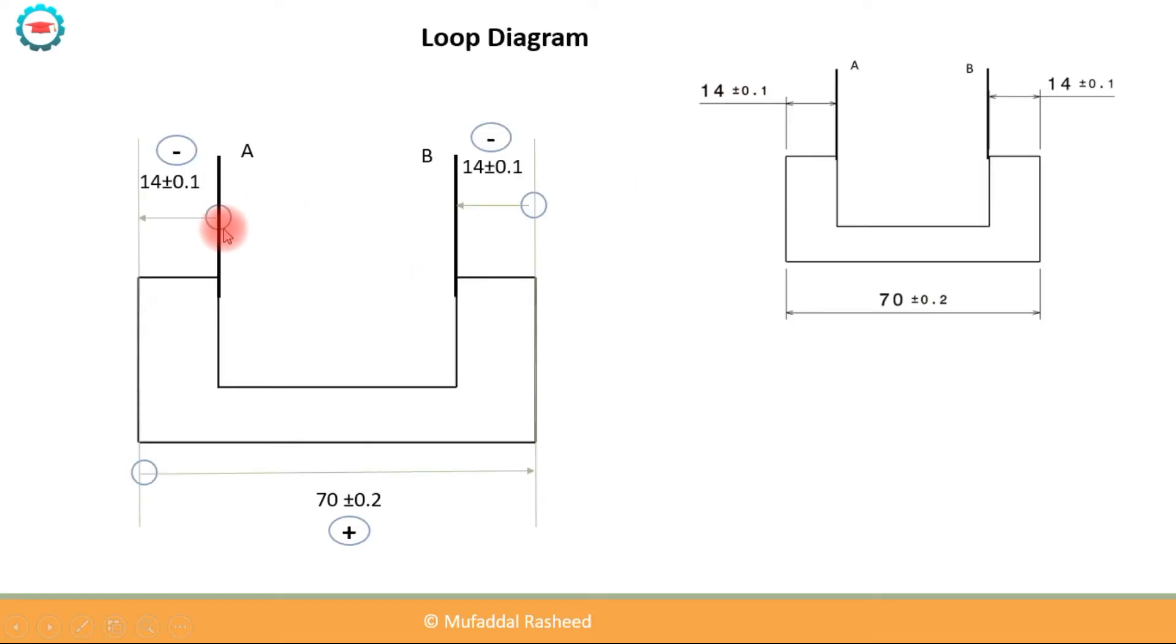This is the starting point. We go towards the left, since we are going towards the left, then we have to consider this dimension to be negative. So this 14 is negative. We come to this line, then we go towards the right, so this dimension is positive, so 70 is positive. When we come over here, we again go towards left. This dimension is again negative.